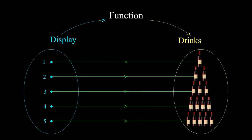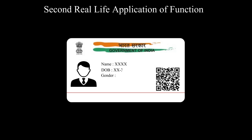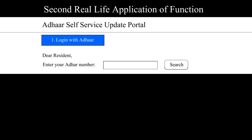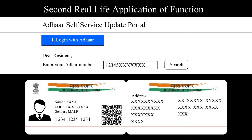Now let's take a second real-life application of function. Have you searched your identity via Aadhaar number? If no, then you should give it a try. Whenever you go to the Aadhaar portal and enter your Aadhaar number, then all your details like date of birth, gender, and address will be known.